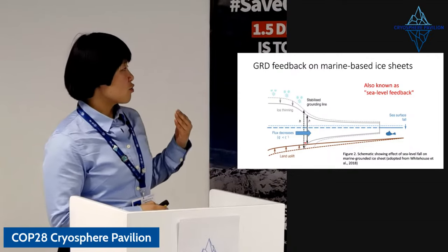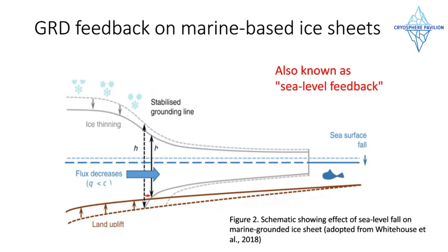When we incorporate GRD effects — which captures the uplift of the solid earth and dropping of sea surface height causing local sea level fall — then as the ice sheet loses its mass, the solid earth bumps up and sea level falls locally. That feeds back into the ice sheet and acts as a stabilizing factor.